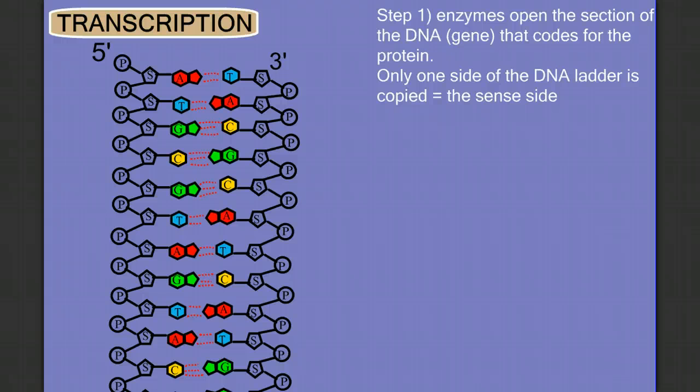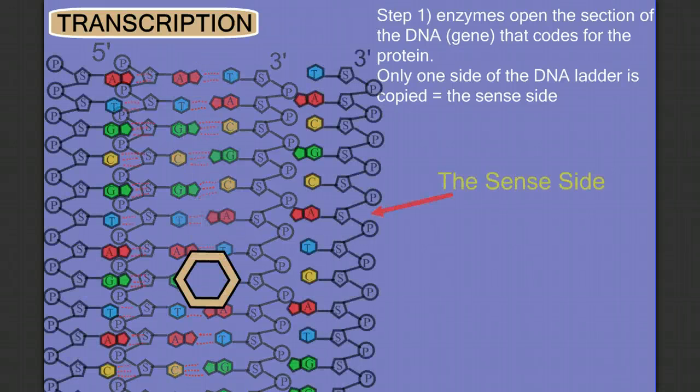In step one of transcription, enzymes are going to open up a section of DNA, a gene, that codes for the production of a protein. And only one side of the DNA ladder is going to be copied. We call that the sense side.